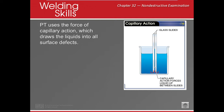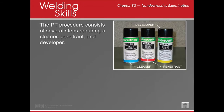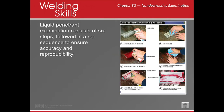Dye penetrant uses capillary action. Think about two pieces of material fresh off the saw that are hard to separate because of liquid drawn up into that small space — that's exactly how dye penetrant works. The process involves a cleaner, a penetrant, and a developer. First, we clean the surface as thoroughly as possible to avoid false indications. Then we apply the penetrant and allow it to dwell for a time specified by the manufacturer for that particular material.